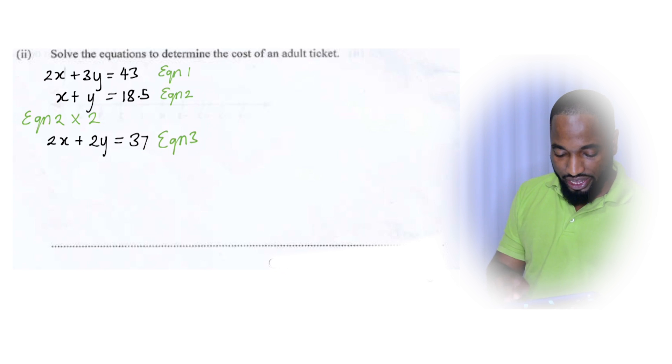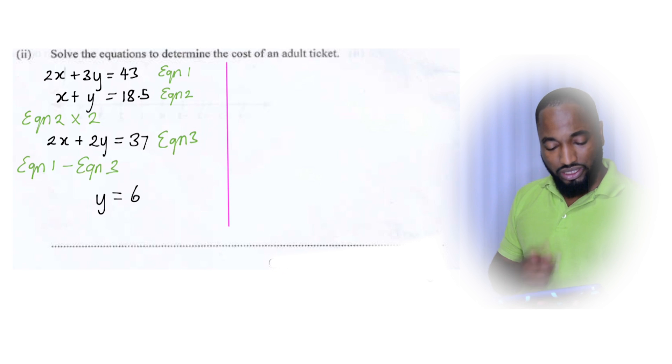So equation two times two, there's an equation there. So we could just take away this from this or the other way around. This equation, take away this equation or the other way around. So what we do? Equation one, take away equation three. We get Y equals six one time. Wow. Isn't that convenient? Yes. Because two X take away two X is zero X. Three Y take away two Y is Y and 43 take away 37 is six. We nearly done.